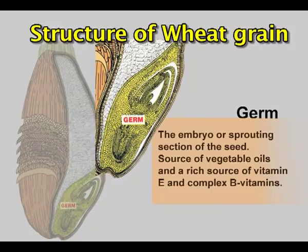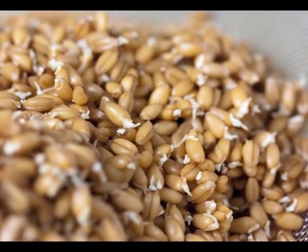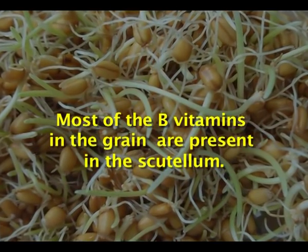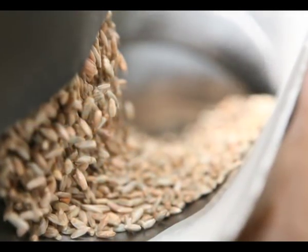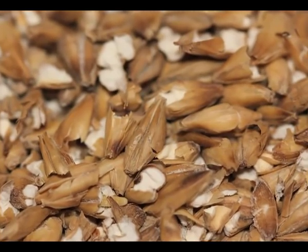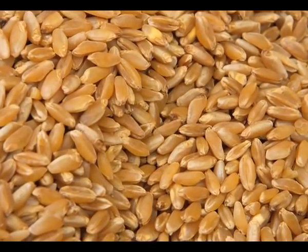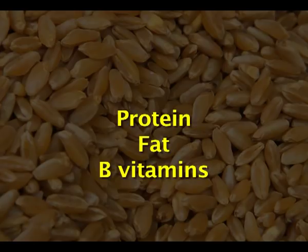The embryo or germ is rich in B vitamins, and it is from here that the sprout begins to grow when the grain germinates. The embryo or germ consists of many parts and is rich in protein and B vitamins. The embryo also consists of the grain stem or scutellum, which is also a very good source of B vitamins. Sometimes during processing the embryo or germ may be removed because it contains fat and may be liable to rancidity during storage. However, retaining the embryo or germ is beneficial because it adds to the nutritive value, being a very good source of protein, fat and B vitamins.